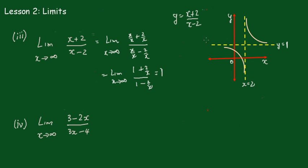One little shortcut you can use here: by looking at the numerator and denominator, the minus 2 won't have any effect when x is a very large number. So in fact what we could do is just cancel those out and see the limit is simply 1 over 1, or 1. You can just ignore the constants and quickly get the answer.